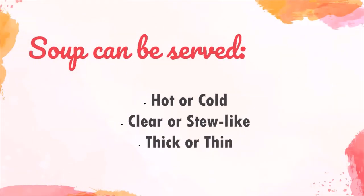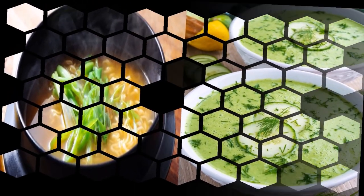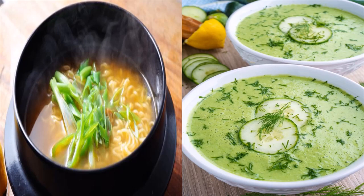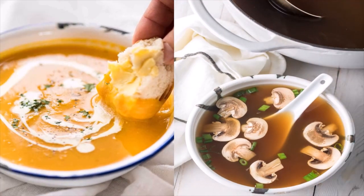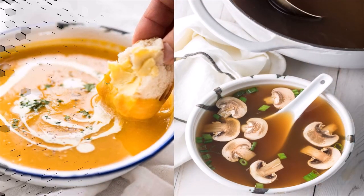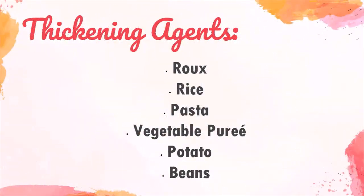Soup can be served as hot or cold, clear or stew-like, thick or thin. Some common thickening agents for soups are roux, rice, pasta, vegetable puree, potato, and beans.